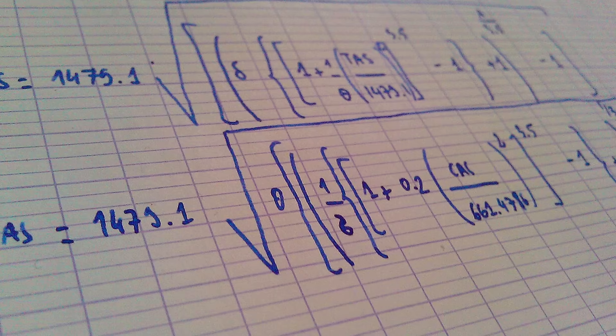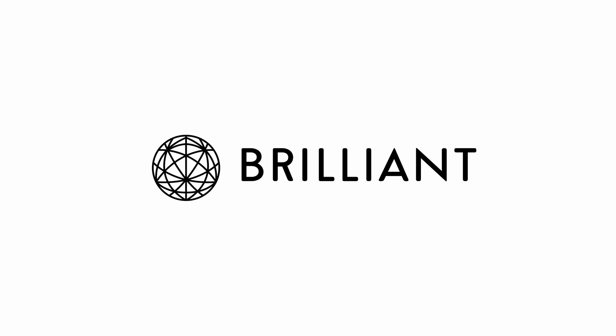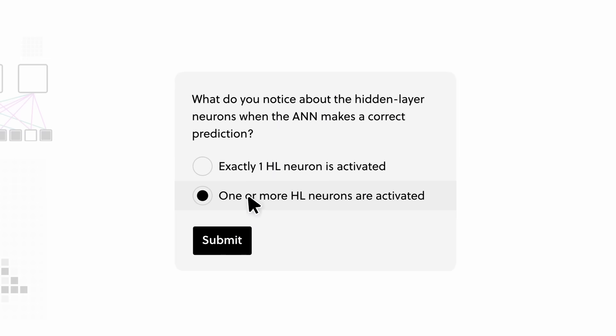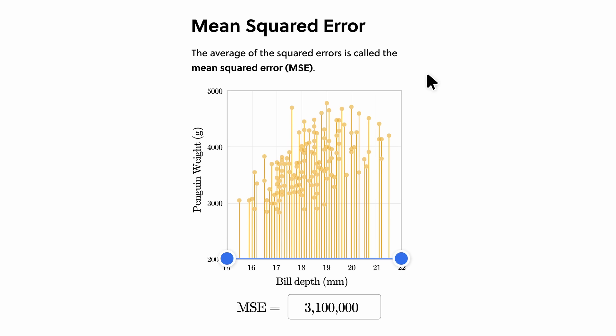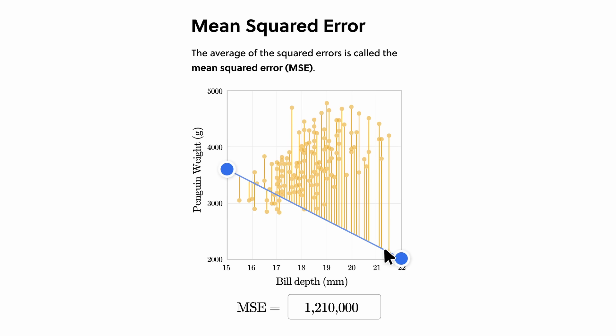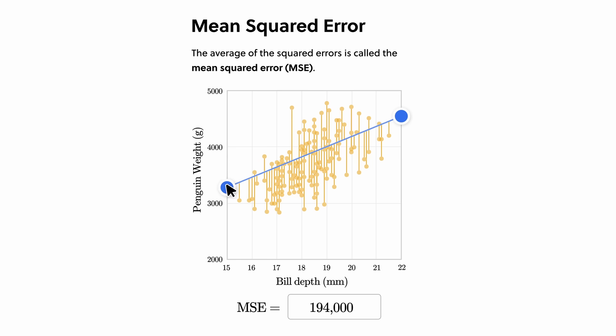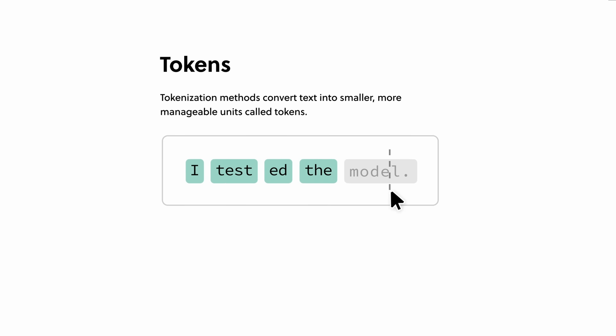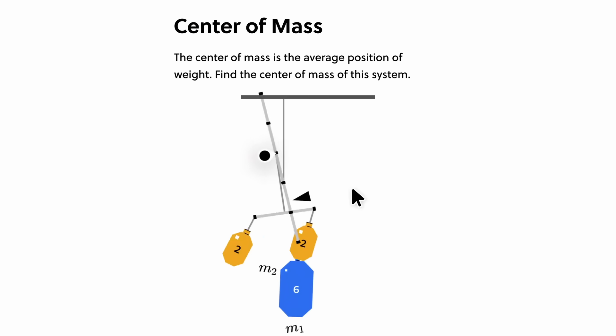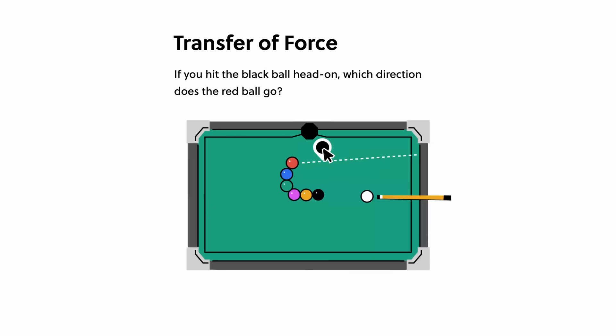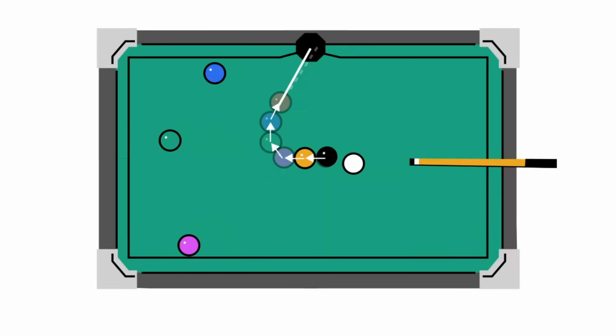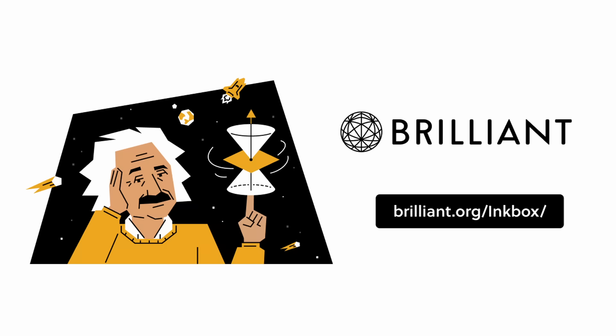In today's world, we can often feel compelled to focus on only one single discipline. But with today's sponsor, Brilliant, you're able to learn by doing through thousands of interactive lessons on data analysis, math, programming, and more. Each lesson on Brilliant has been created by teachers and researchers from among the top universities and companies in the US, and they're filled with opportunities for hands-on problem solving that give you a deeper understanding of whatever you're trying to learn. Rather than focusing on rote memorization, Brilliant builds your critical thinking while you build real knowledge through their fun, bite-sized lessons that are perfect for improving your personal or professional skills through mere minutes of practice every day. To try everything Brilliant has to offer for free for a full 30 days, visit brilliant.org/inkbox, or click on the top link in the description. You'll also get 20% off an annual premium subscription.